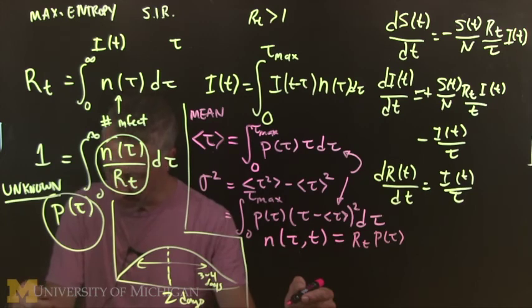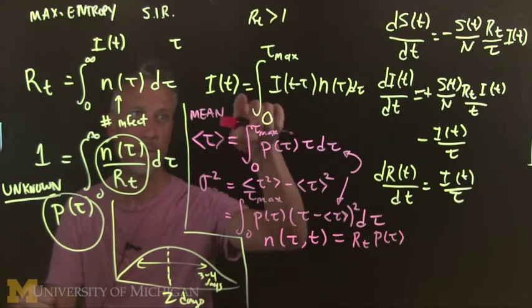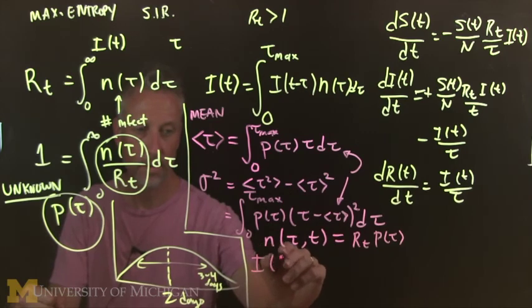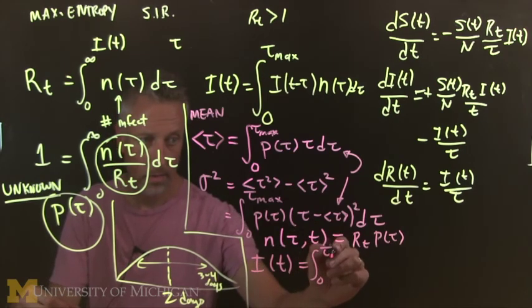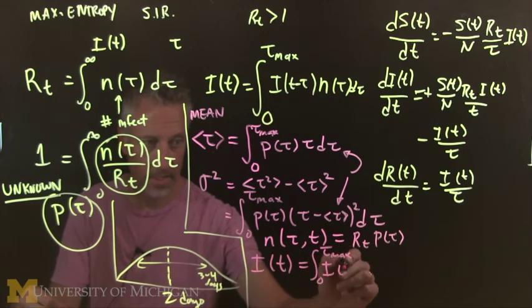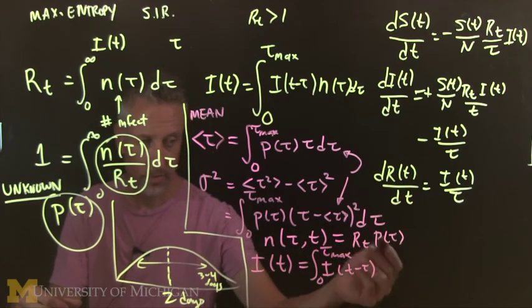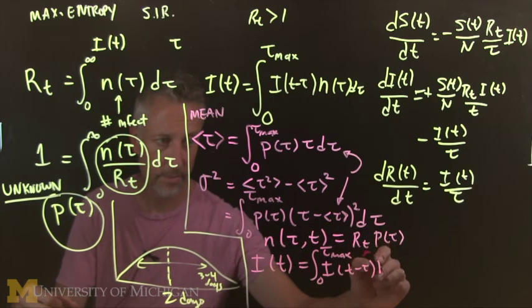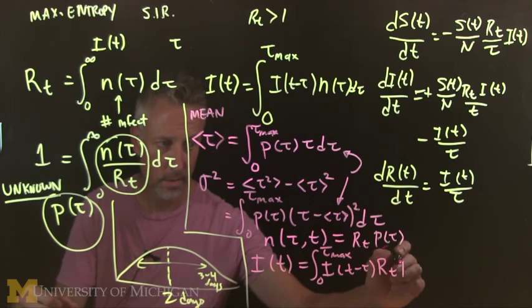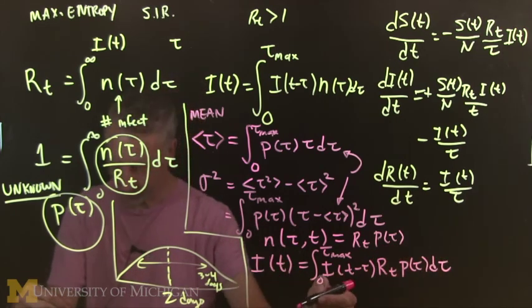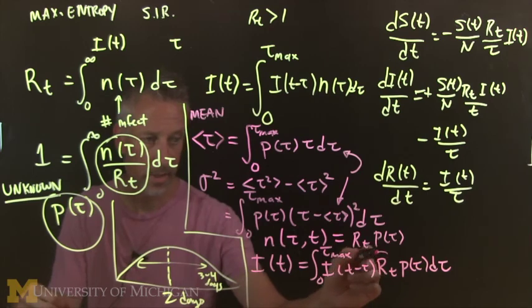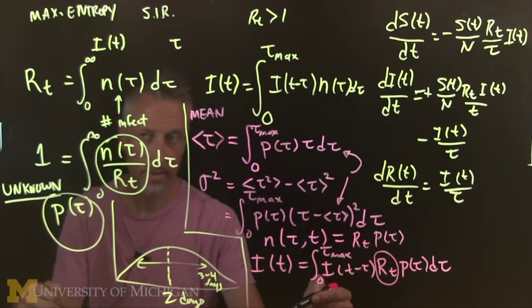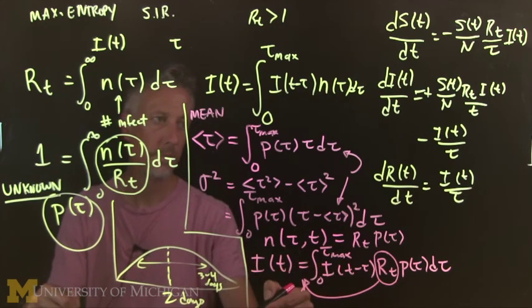And so, what we're going to do now, is we're going to plug in using the equation that we wrote before. That's right up here. So, i of t. This is called the Lotka-Euler equation, by the way. If you've ever heard of that. We have that. We have i of t minus tau. So, this time lag that we're considering the interval. And then we just simply plug in Rt times p tau, d tau. Now, what we're doing here in this equation is we're assuming that Rt is not time dependent. It's a number. So, it comes out.